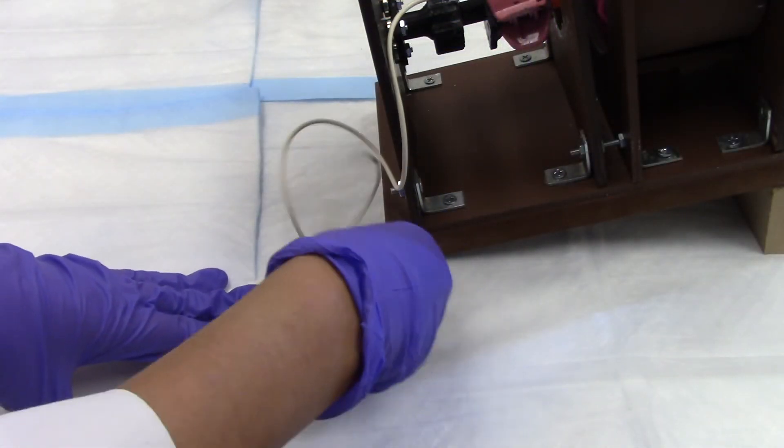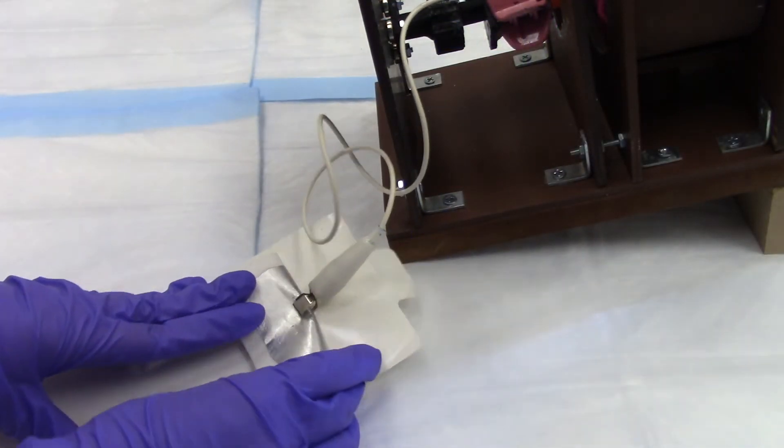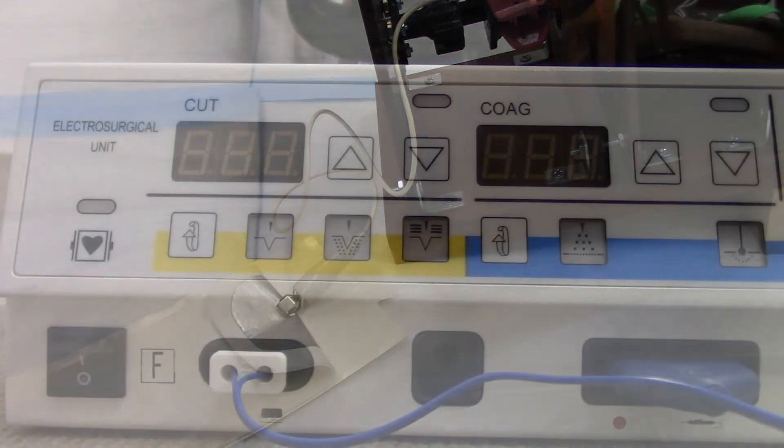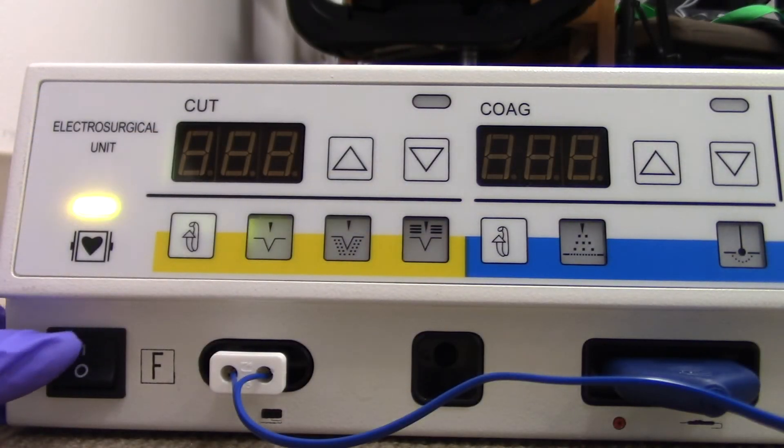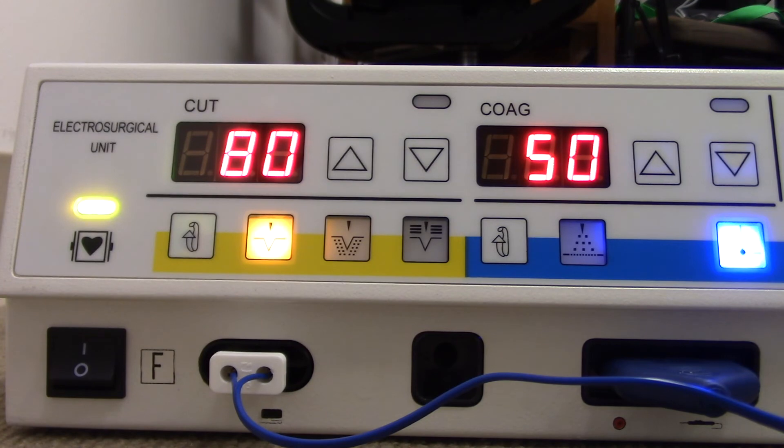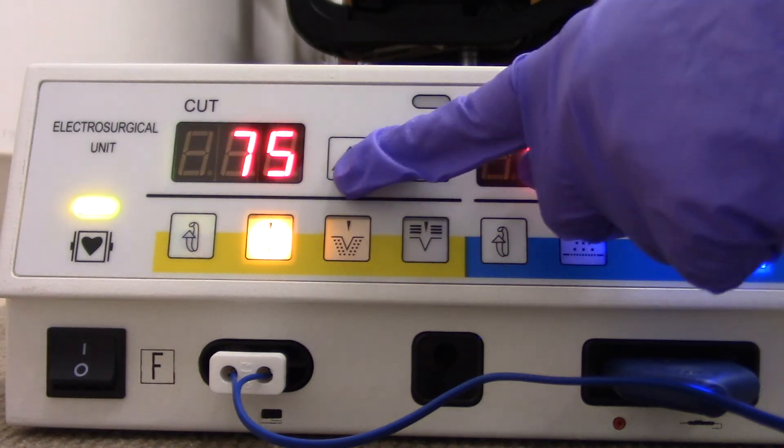A wire extending from the back of the clamp connects the cervical model to the grounding pad. Once connected, the LEEP machine can be turned on. It is good to test the machine with the model first to find the optimal settings that will cut the gel cervical model.